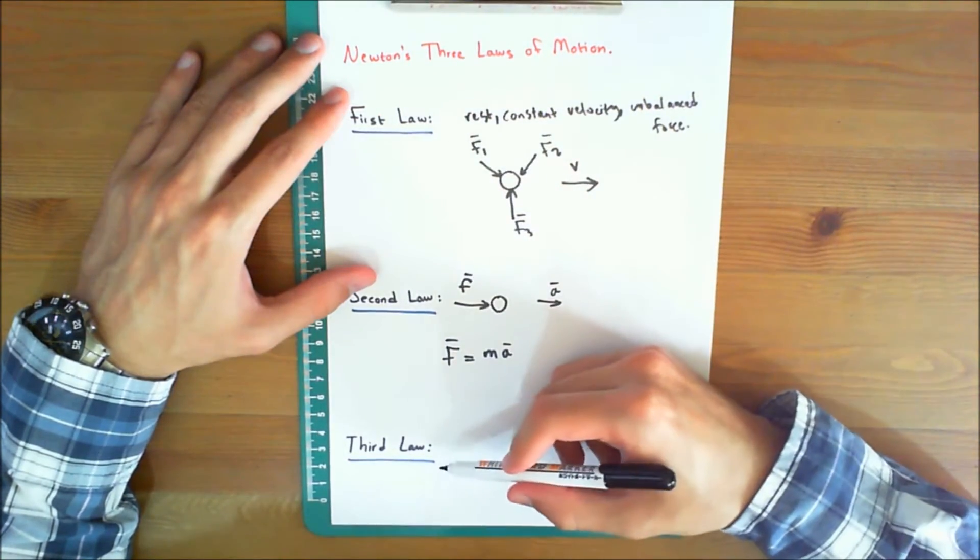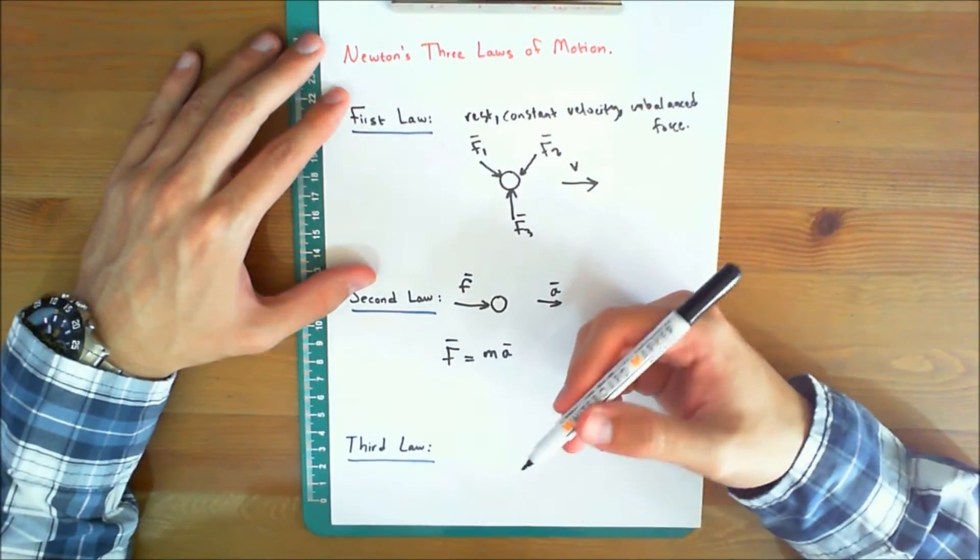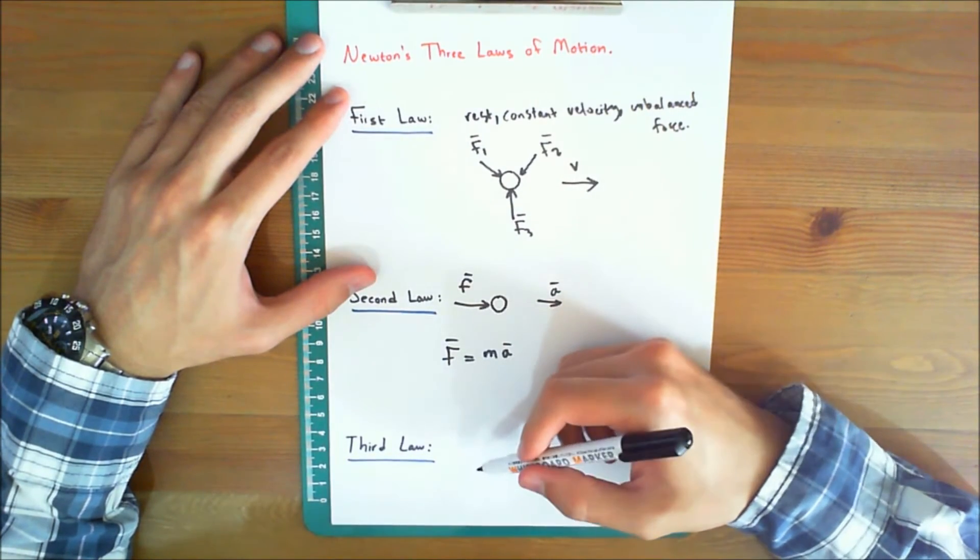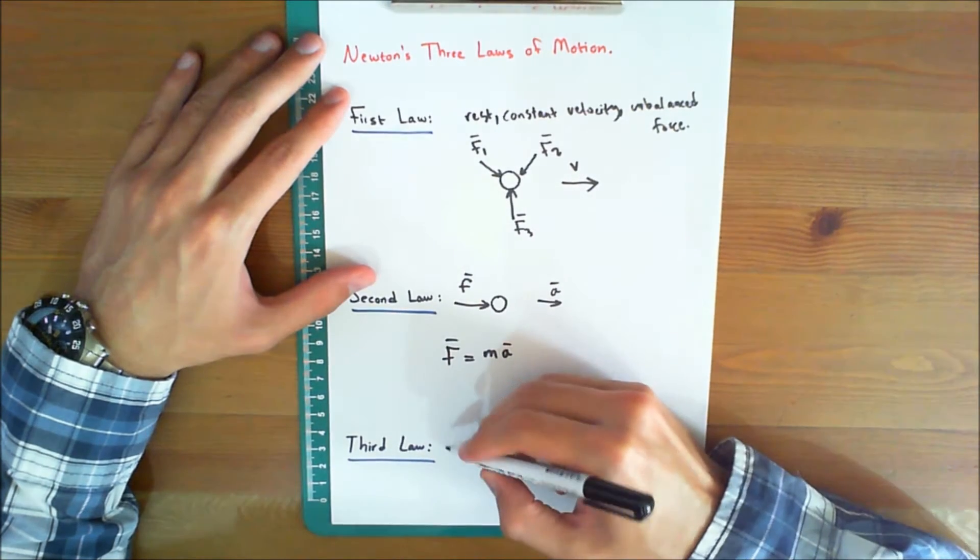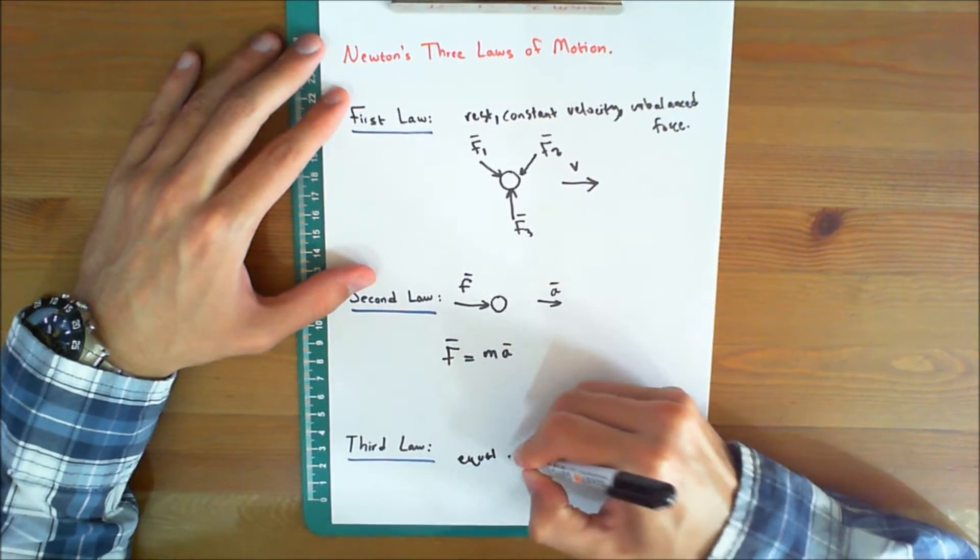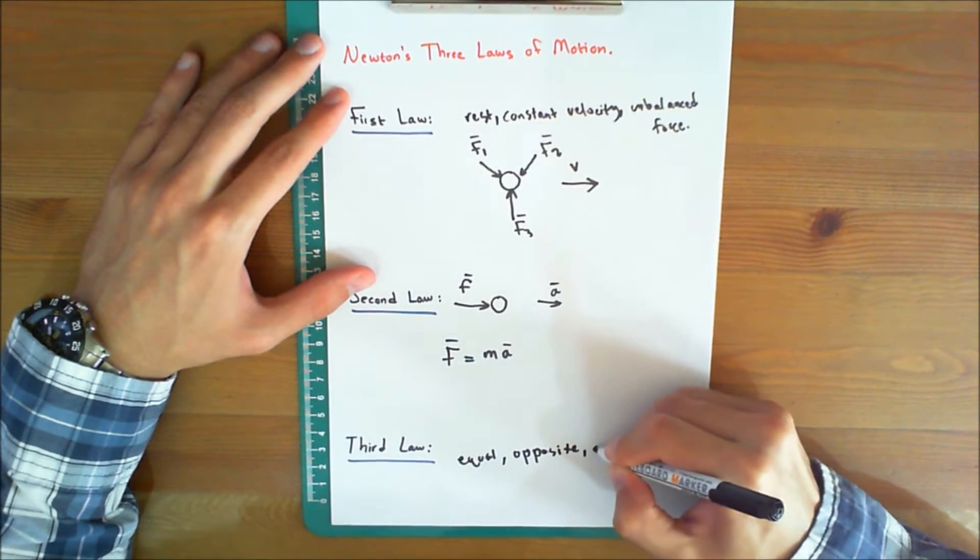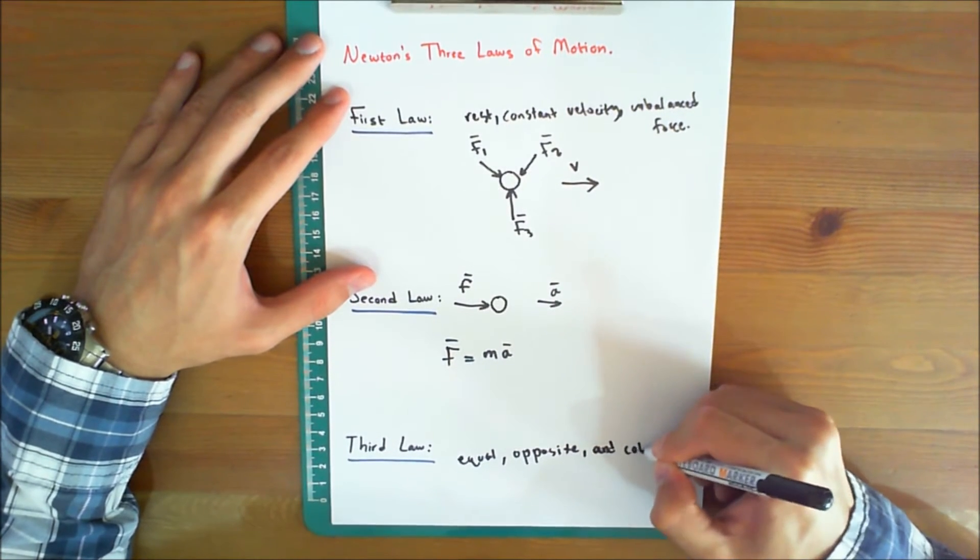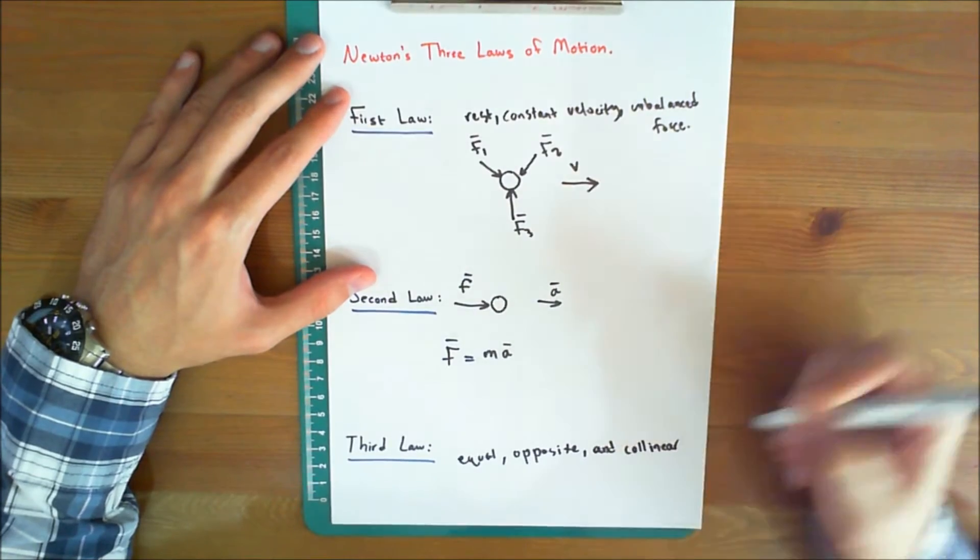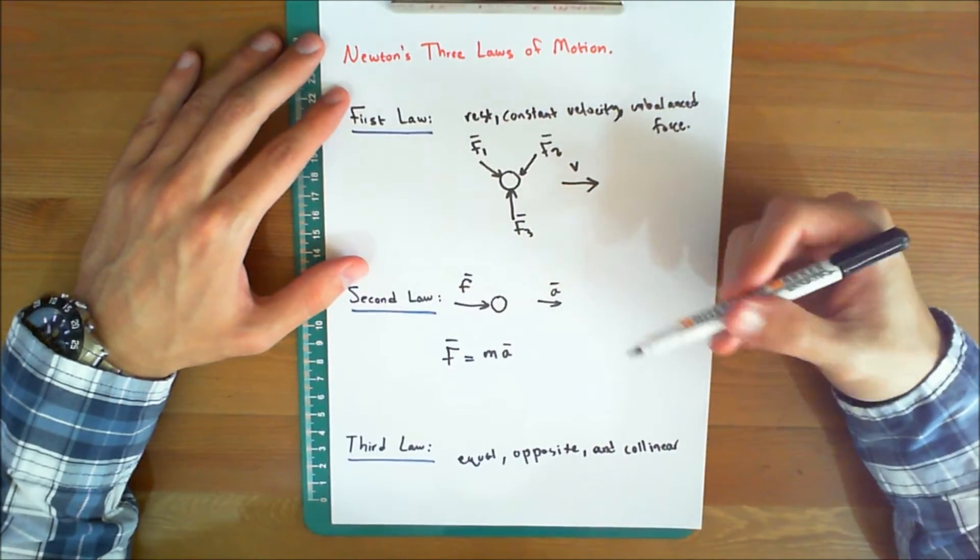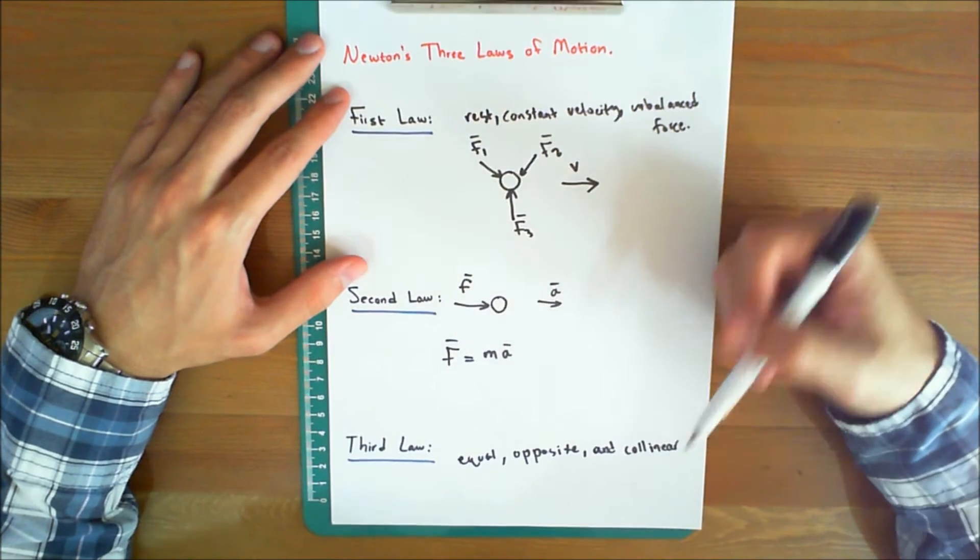The third law states that the mutual forces of action and reaction between two particles are equal, opposite, and collinear. So these three keywords: equal, opposite, and collinear. In other terms you can say for every action there is an equal, an opposite, and collinear as well, reaction.